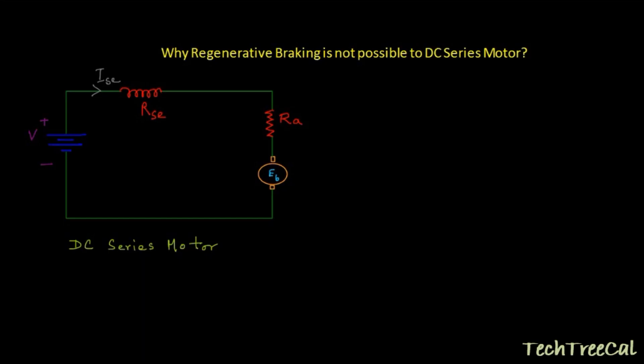In this video we are going to understand why regenerative braking is not possible in DC series motors. Here I have drawn a connection diagram of a DC series motor where this is the DC source, this is the series resistance RAC, this is the armature resistance RA, and the generated back EMF, this is ED.